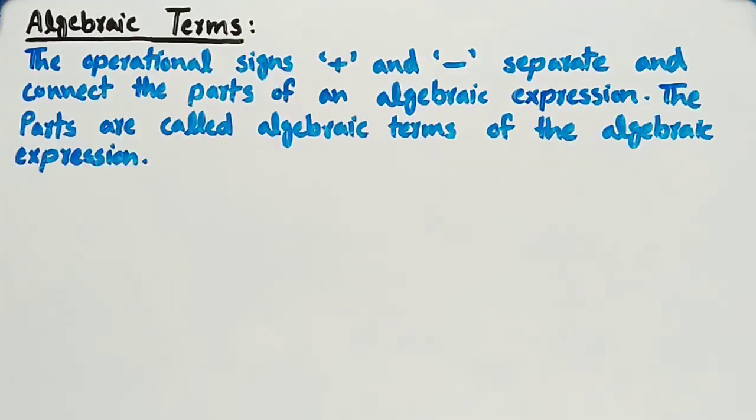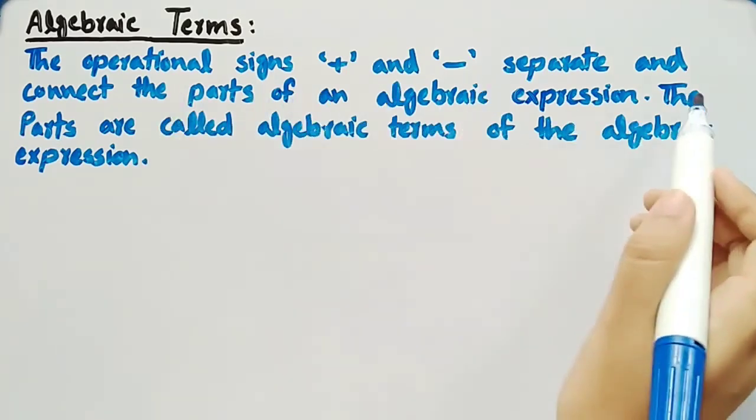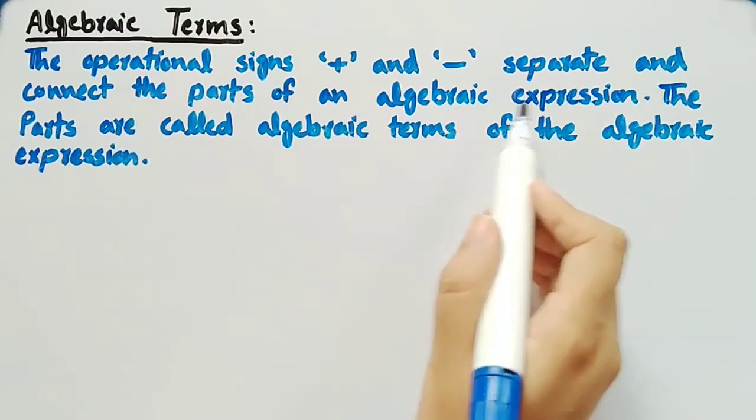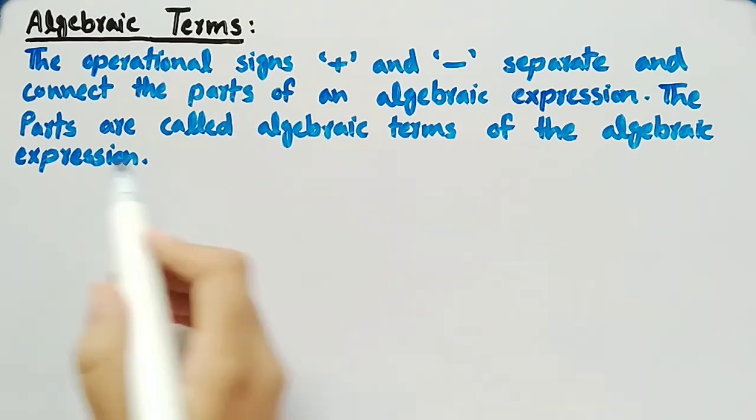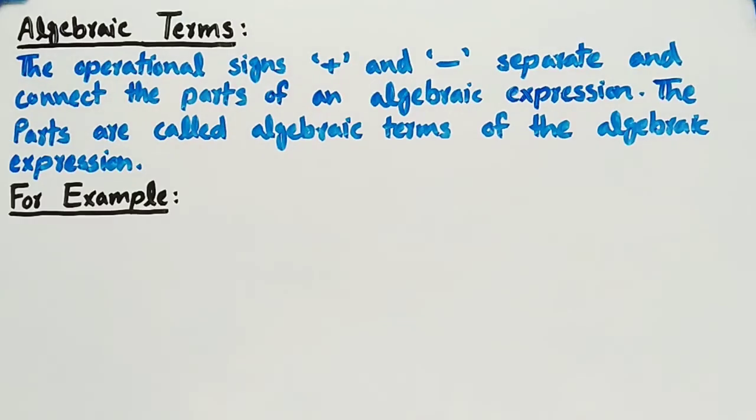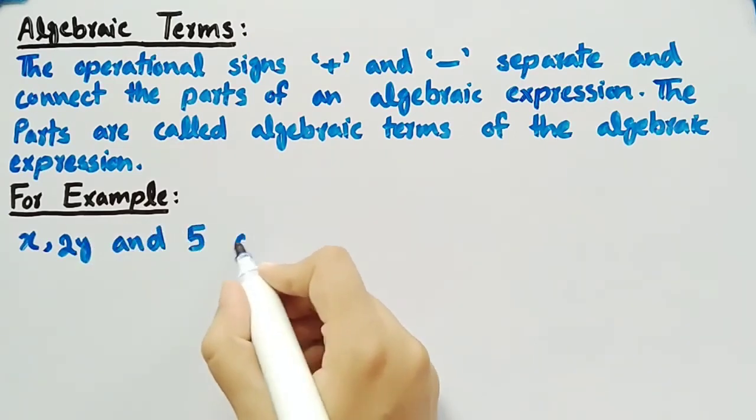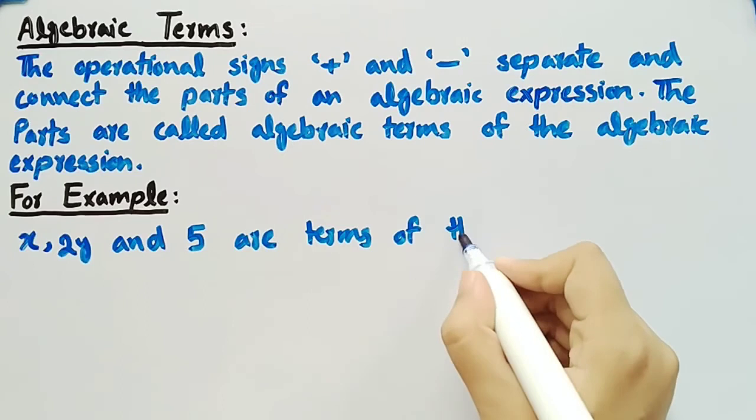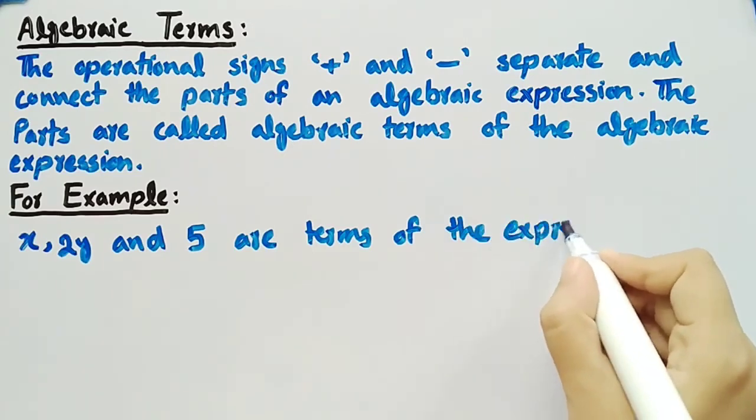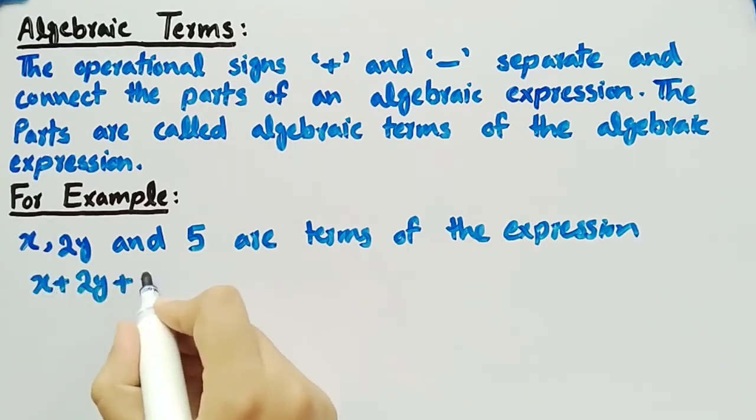Now, let's see what are algebraic terms. The operational signs plus and minus separate and connect the parts of an algebraic expression. The parts are called algebraic terms of the algebraic expression. For example, x, 2y, and 5 are terms of the expression x plus 2y plus 5.